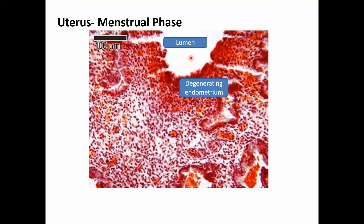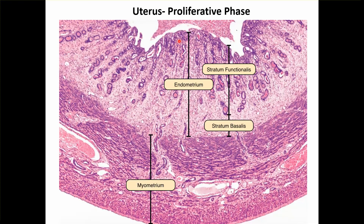This is the menstrual phase showing the degenerating endometrium. The uterus lumen is lined with simple columnar epithelium. The entire endometrium can be divided into the stratum functionalis — the upper two-thirds — and the lower one-third is the stratum basalis. Then there is the myometrial layer, also called stratum vasculare, which has many blood vessels, and the outermost is the perimetrium covered by simple squamous epithelium.